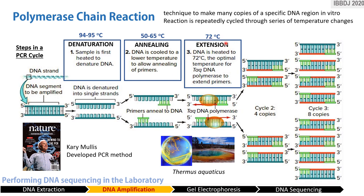During extension, temperature is raised to 72 degrees Celsius to catalyze complementary base pairing by the enzyme Taq polymerase, which is extracted from the heat-stable bacteria Thermus aquaticus. The amount of DNA doubles with each PCR cycle. Starting with one copy, after cycle 1 you have two copies, cycle 2 produces four copies, cycle 3 produces eight copies, cycle 4 produces 16 copies, and so on.